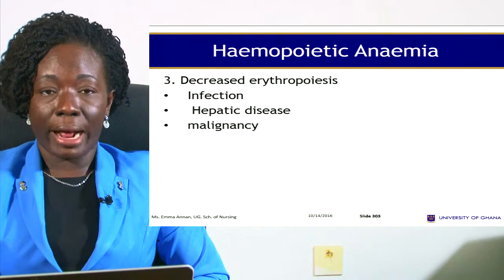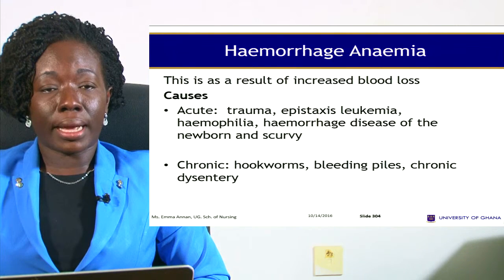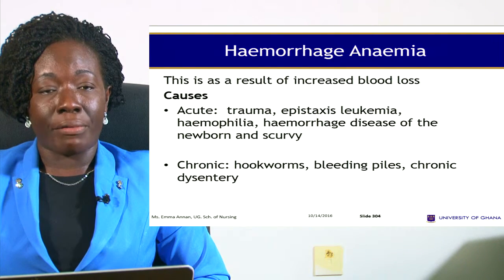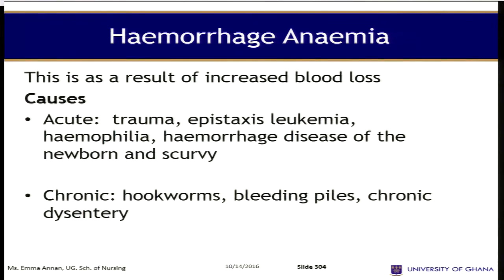Hemorrhagic anemia is as a result of increased blood loss. The acute causes include trauma, bleeding from the nose, patients with leukemia, hemophilia, and hemorrhagic diseases of the newborn. For chronic causes, we have hookworm, bleeding peptic ulcers, and chronic dysentery, because they result in ongoing blood loss.